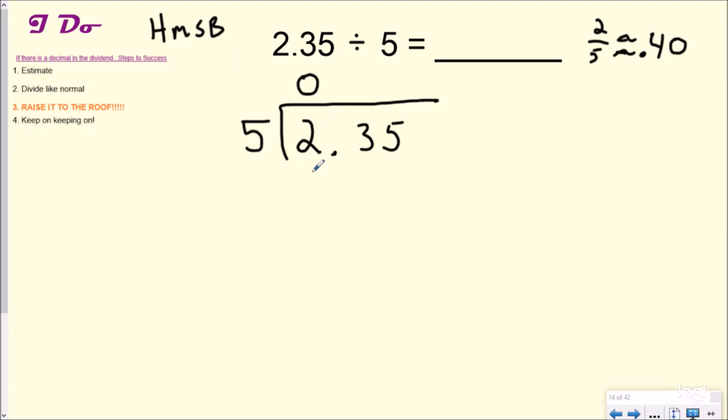So multiply, that's going to be 5 times 0, zero. Subtract, we get 2, bring down our next digit, which is 23. And so we are going to say, how many groups of 5 go into 23? And the answer to that is 4. 5 times 4 is 20. We're going to subtract, which is 3. And then we're going to bring down our 5.